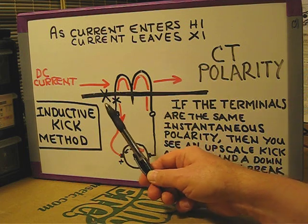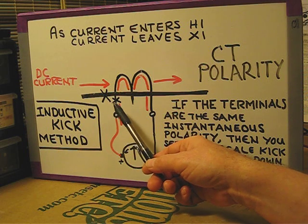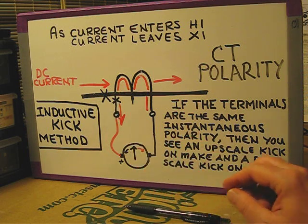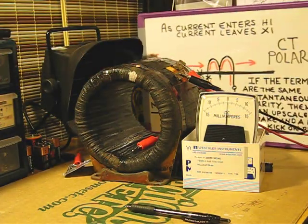CTs are identified on schematic diagrams with the H1 side shown as a large X and the X1 with a small X. Now let's take a look at an actual CT and see how the terminals are identified.